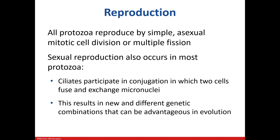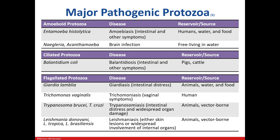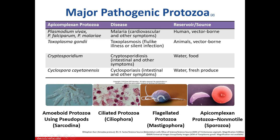Protozoans have the ability to reproduce both sexually and asexually. Sexual reproduction gives them an evolutionary advantage due to genetic differences. This table depicts major pathogenic protozoa. They're classified based on movement. Naegleria, which is a brain-eating amoeba, has amoeboid motion and moves by crawling. Balantidium is ciliated and moves using cilia, and is associated with gastrointestinal issues. Trichomonas is flagellated, and Plasmodium, which causes malaria, is an apicomplexan, which is non-motile.